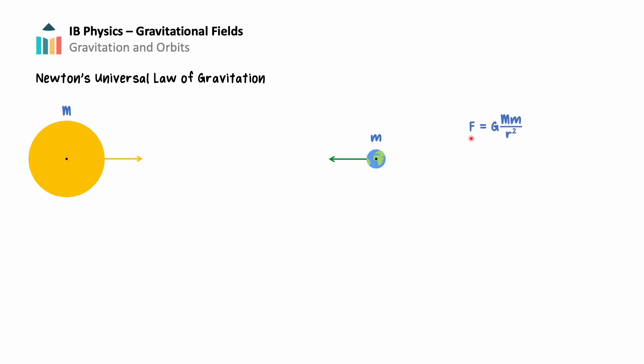Mathematically, this is expressed as F equals G times M times m divided by R squared. Here, F represents the attractive force, G is the gravitational constant 6.67 times 10 to the negative 11th, capital M and lowercase m are the two masses where capital M often denotes the larger mass, and R is the distance between their centers of mass.